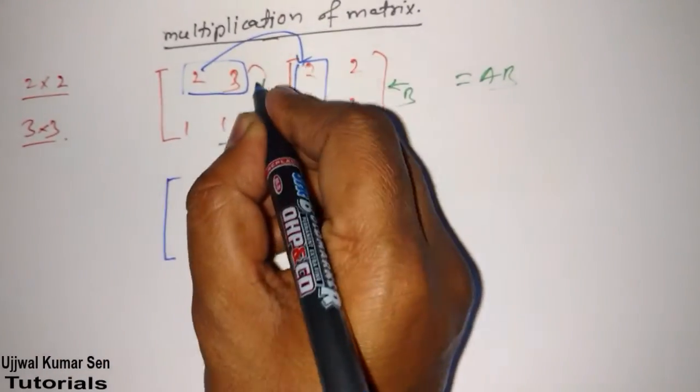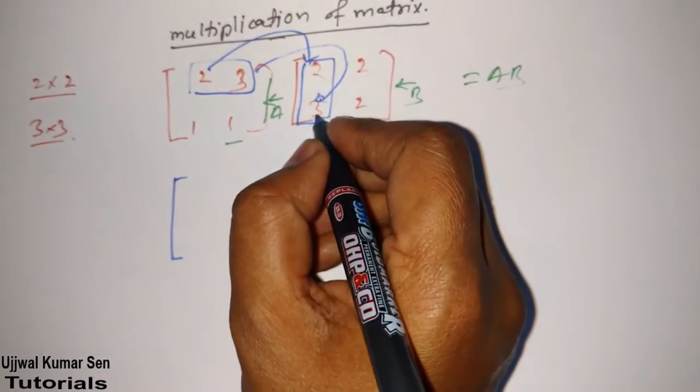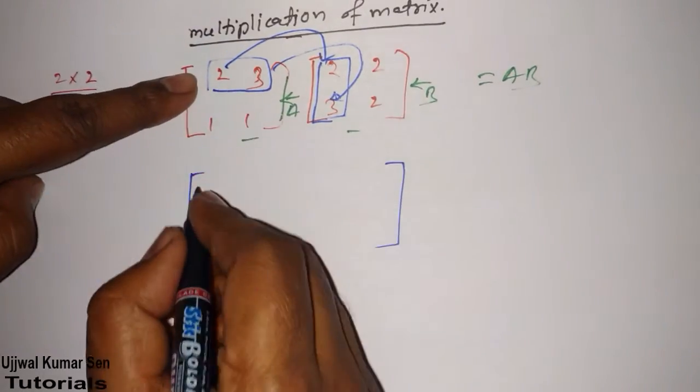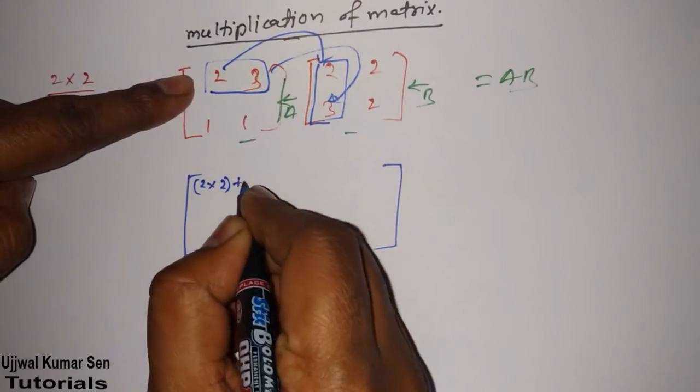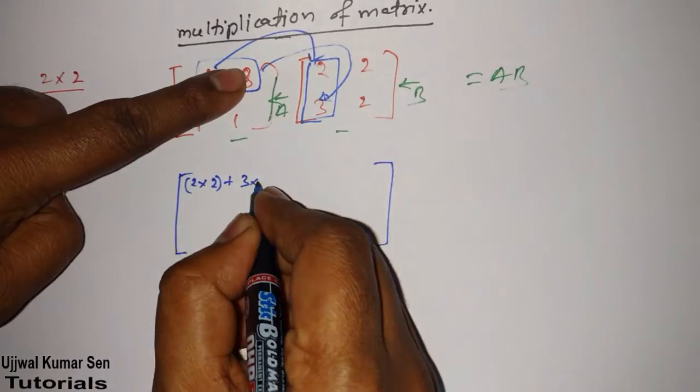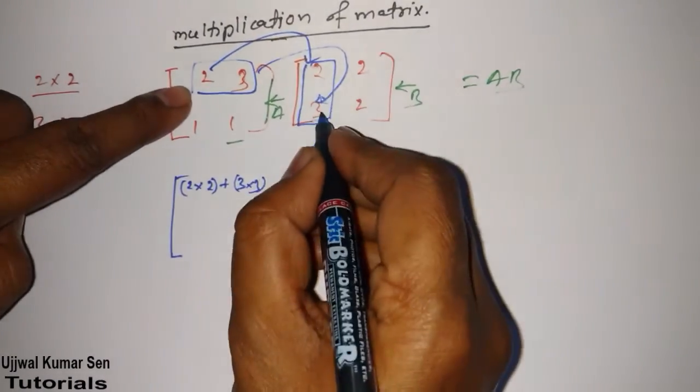We will multiply this one and this one, then we will add. Just look at this, 2 multiple 2 plus 3 multiple 3, row by column.